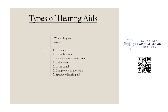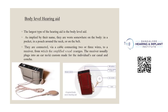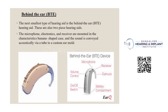Next we move to the types of hearing aids. The different types are: body aid, behind the ear, receiver in the ear canal, in the ear, in the canal, and completely in the canal. Body-level hearing aids are the largest type. As their name implies, they are worn somewhere on the body — in a pocket, a pouch, around the neck, or on the belt. They are connected by a cable of two or three wires to a receiver that delivers amplified sound. The receiver usually plugs into an ear mold customized for the individual's ear canal and concha.